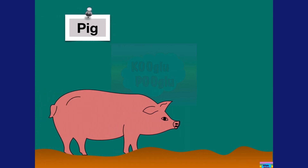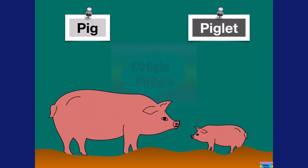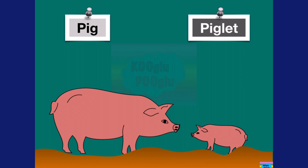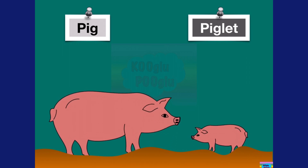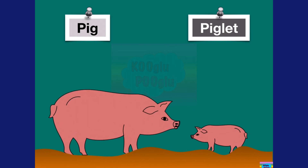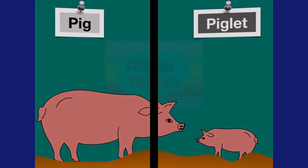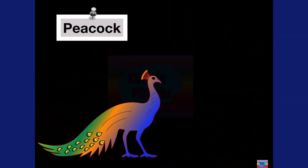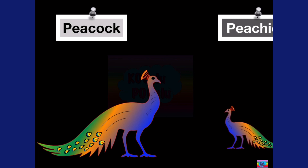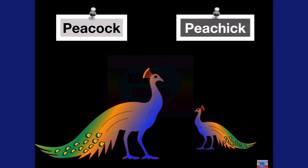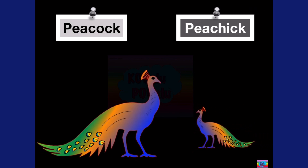Here we got a pig, and here we have a piglet. Now we have a beautiful peacock, and a beautiful peacock's baby is called a pea chick.